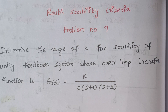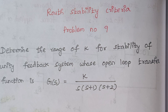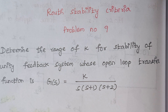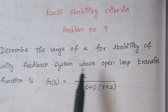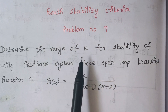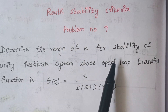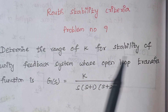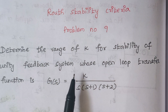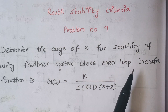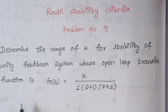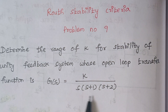Hello viewers, I am Kausalya. Today we are going to solve problem number 9 under the category Routh Stability Criteria. The problem is: determine the range of K for stability of a unity feedback system whose open loop transfer function is given.